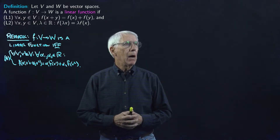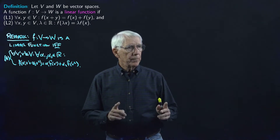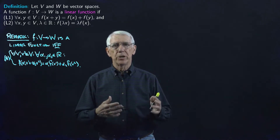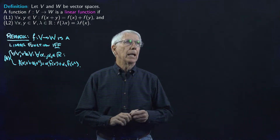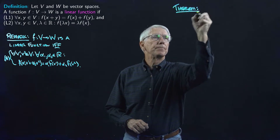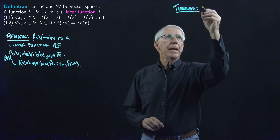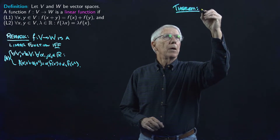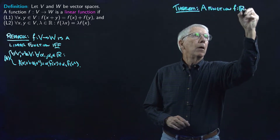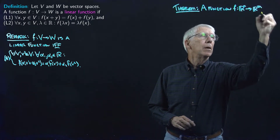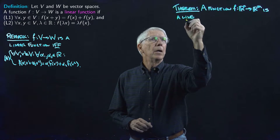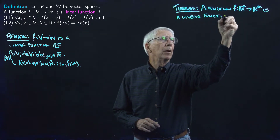So now we've got some space here, and what we're going to do is obtain a characterization theorem for linear functions between finite dimensional vector spaces, essentially between Euclidean spaces. Let's write this down as a theorem: a function between Euclidean spaces is linear, or a pure linear function, as I said I would try to say most of the time,